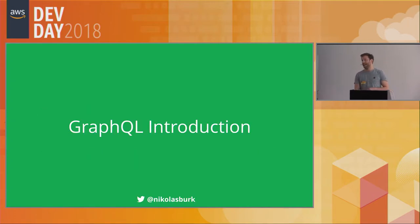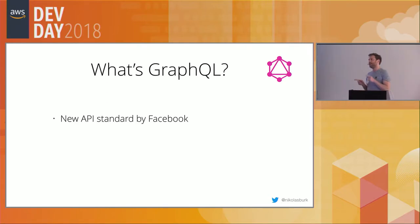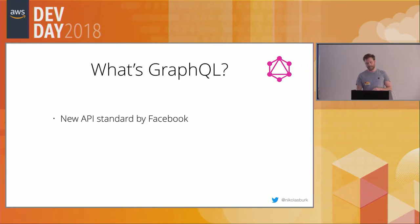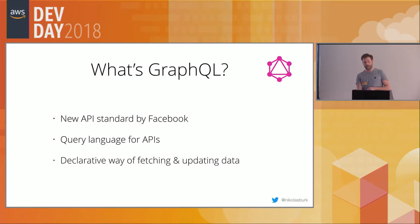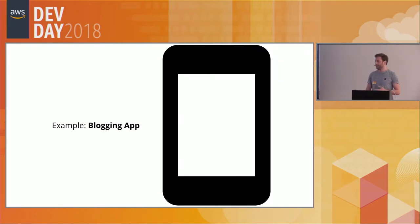What is GraphQL? Very briefly stated, it's a new API standard developed and open-sourced by Facebook in 2015 - though Facebook started working on it in 2012 and open-sourced the specification along with a JavaScript reference implementation in 2015. It's essentially a query language for APIs that enables a declarative way of fetching and updating data.